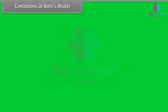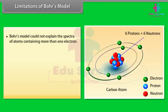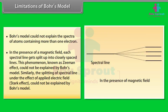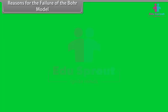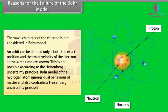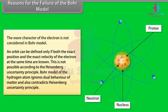Limitations of Bohr's model: 1. Bohr's model could not explain the spectra of atoms containing more than one electron. 2. In the presence of a magnetic field, each spectral line splits into closely spaced lines — the Zeeman effect — which Bohr's model could not explain. Similarly, the splitting of spectral lines under an applied electric field — the Stark effect — could not be explained. The wave character of the electron is not considered in Bohr's model; an orbit requires knowing both the exact position and velocity of the electron simultaneously, which is impossible according to Heisenberg's uncertainty principle. Bohr's model ignores the dual behavior of matter and contradicts Heisenberg's uncertainty principle.